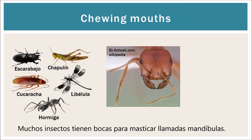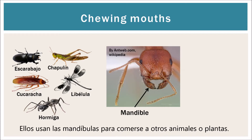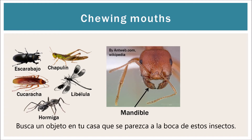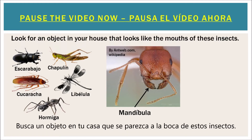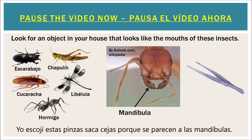Many insects have chewing mouths called mandibles. Some insects use mandibles to eat other animals while others eat plants. Now pause the video and look for an object in your house that looks like the mouth of these insects. I chose tweezers because they look like the ants' mandibles.